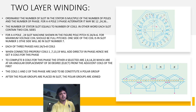The number of stator slots is equal to the number of coils, which are all of the same shape. In other words, each slot contains two coil sides, one at the bottom of the slot and the other at the top. The coils overlap each other just like a single ceiling of a rooftop.